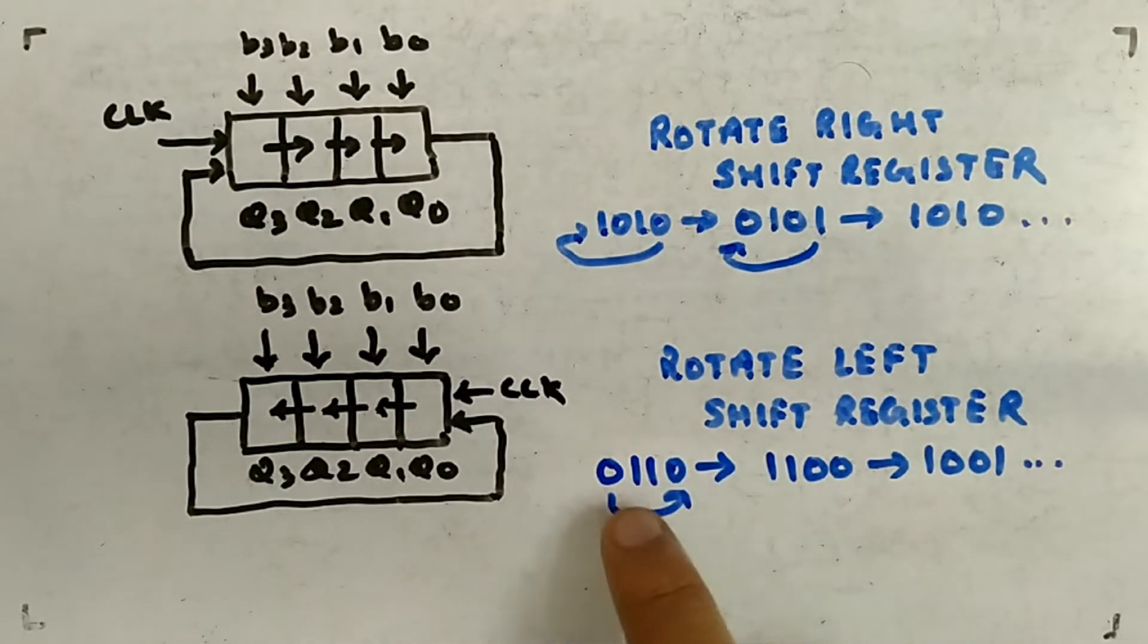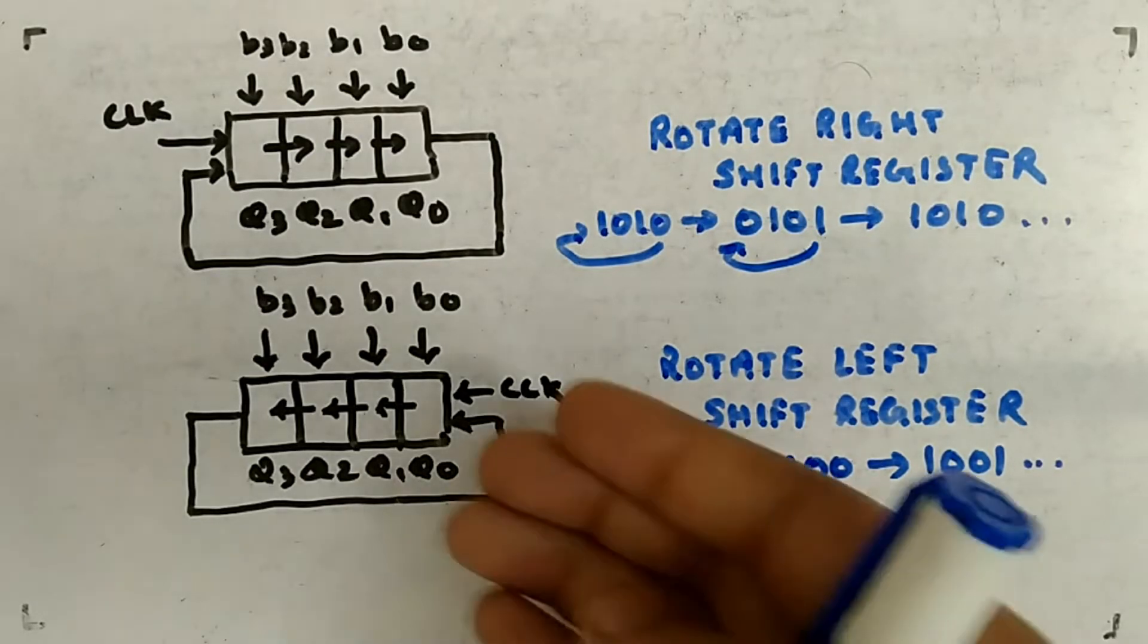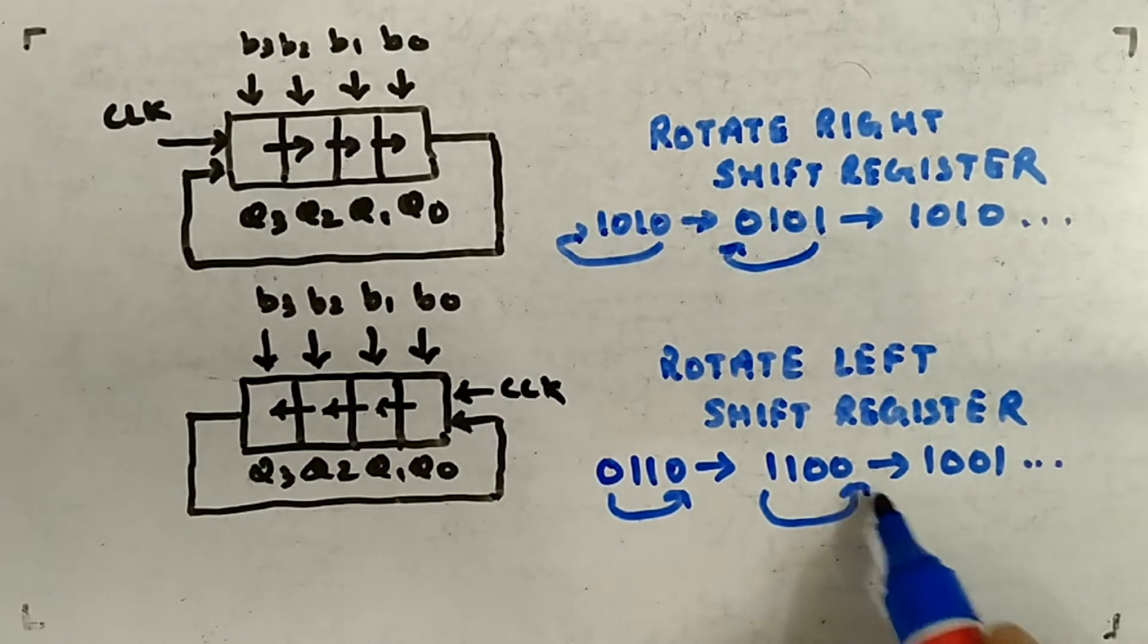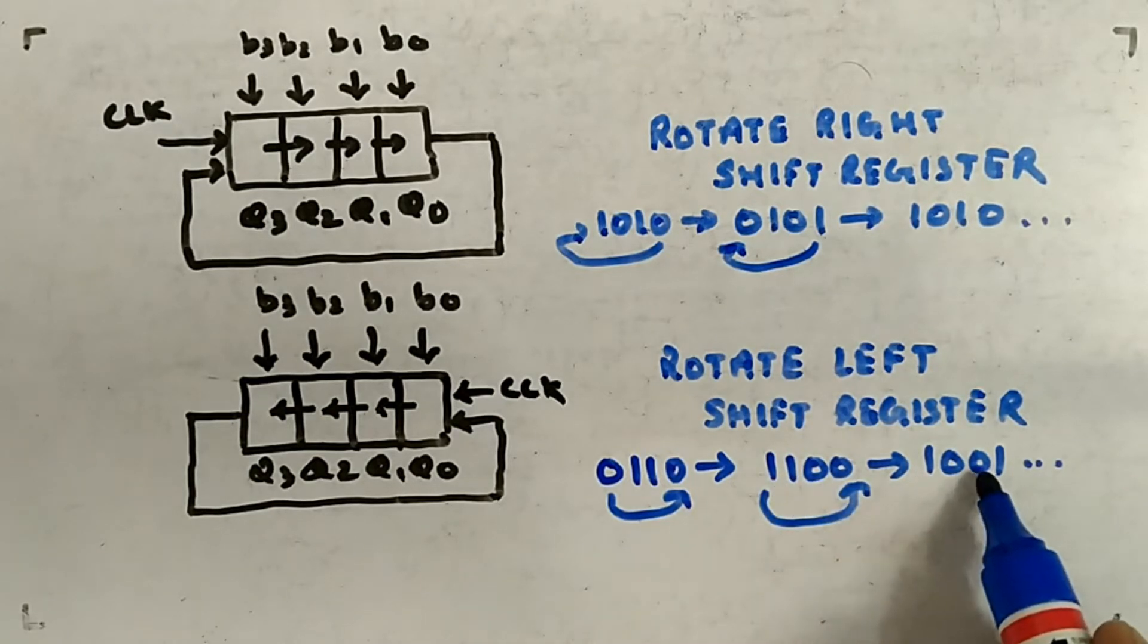Similarly you can have left shift. Here you can see 0110 if you have, so this 0 will come here, 0 will be here, 1 will be here, and 1 will be here. So that's how shifting happens - it will become 1101. Then again this one will come here, so these all bits will shift.